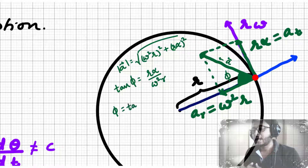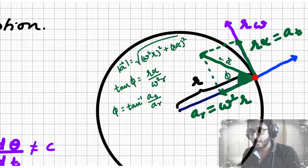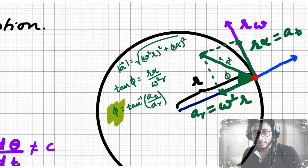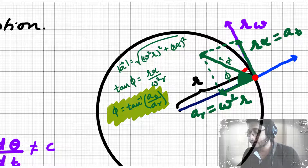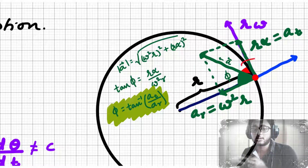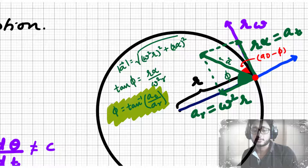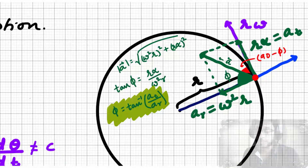If we assume ar to be the centripetal acceleration and at to be the tangential acceleration, then φ = tan⁻¹(at / ar). That is how we calculate the angle the resultant acceleration makes with the radius or the tangent, depending on your choice.